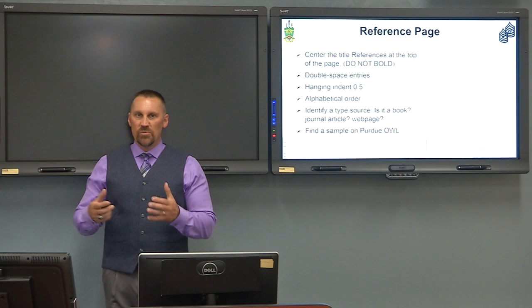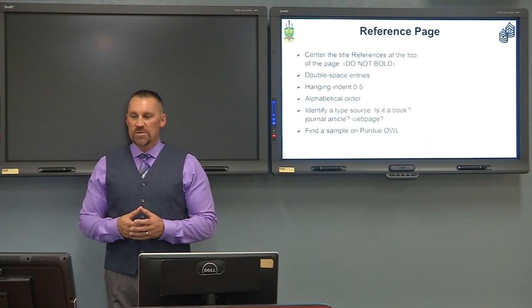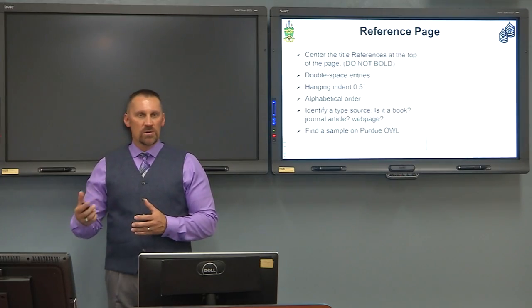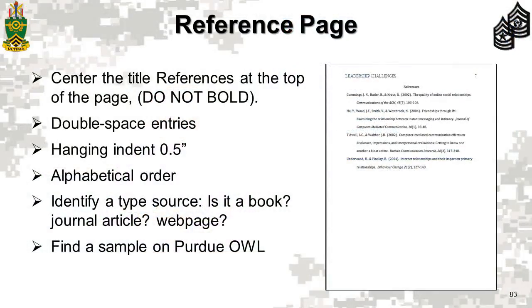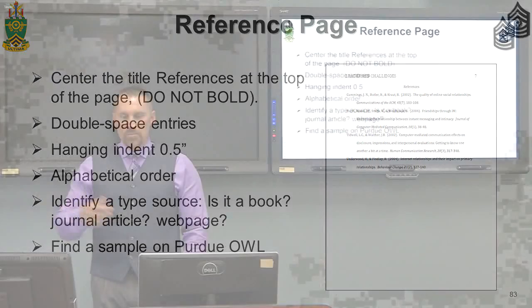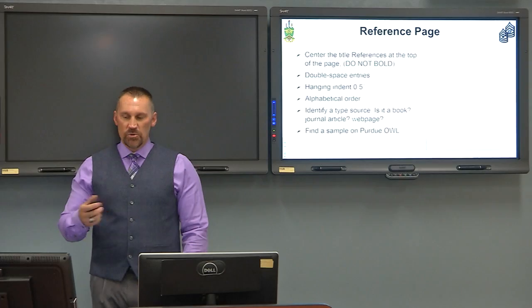Before you format the source on your reference page, you need to ask yourself what type of source it is. Books will be formatted one way, a journal article is formatted another, and a web page yet another way. Once you identify that — whether you got a physical book from the library, an article from a magazine, or a web page article — then you'll know how to format the source. You'll find plenty of examples at the Purdue OWL website.